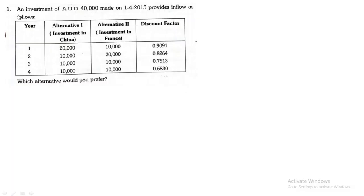The question gives us an investment of AUD 40,000 made on 1st April 2015, providing inflows for four years. Alternative one is investment in China with given cash inflows, and alternative two is the same investment made in France with its cash inflows and a discounting factor. We need to determine which alternative to prefer. Whenever cash inflows are given, we find the net present value — multiply cash inflow by PV factor to get present value, then compute NPV.